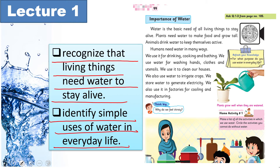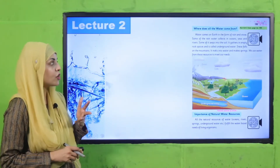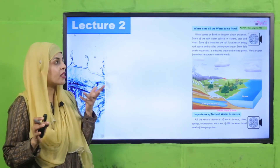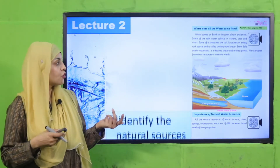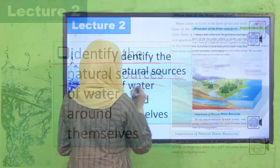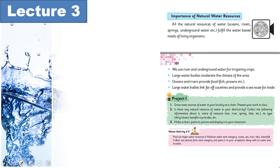Paani ki ahmiyat jo hai woh kya hai, hum ye samjhenge, aur daily basis pe kaise kaise, kin kin kamon ke liye aap paani ko istamal kar rahe hain — we will also discuss that in Lecture Number 1. Then we will move forward towards Lecture Number 2, where the main question is: where does all the water come from? All students will be able to identify the natural sources of water around themselves — kahan se paani aata hai, what are the different sources of water.